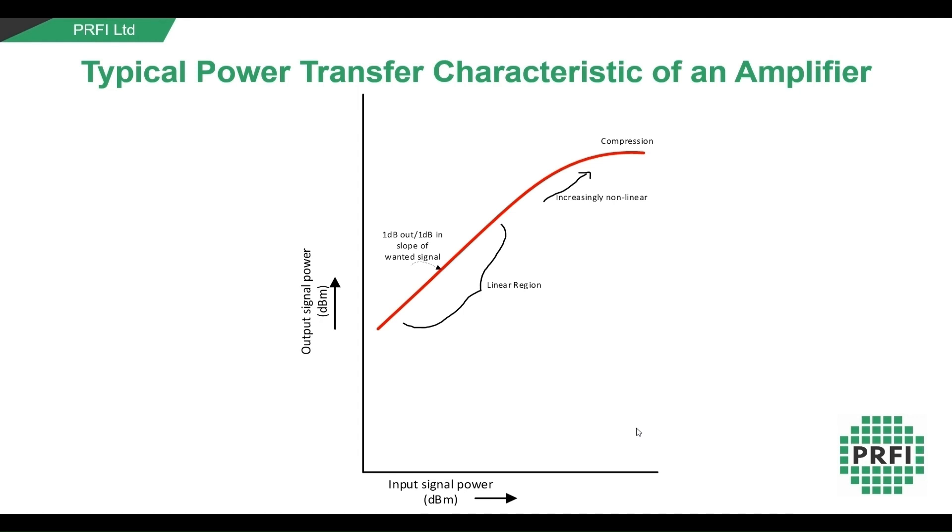The graph shows the power in power out transfer of a typical RF circuit. At low input levels the circuit is essentially linear. A 1 dB increase in applied power giving a 1 dB increase at the output. As applied power increases there comes a point where the circuit begins to run out of steam. It is no longer able to keep up the 1 dB in to 1 dB out increase. It is becoming non-linear and heading towards compression where it can no longer give any more increase in output power.